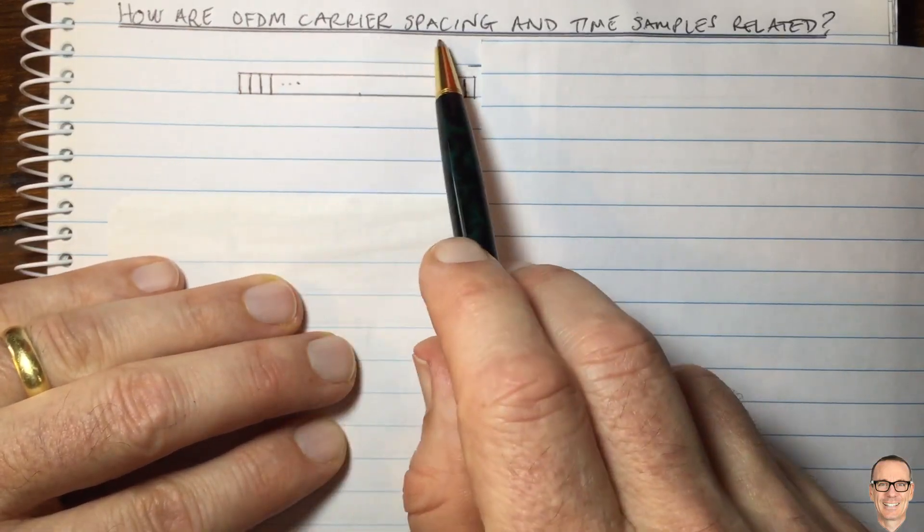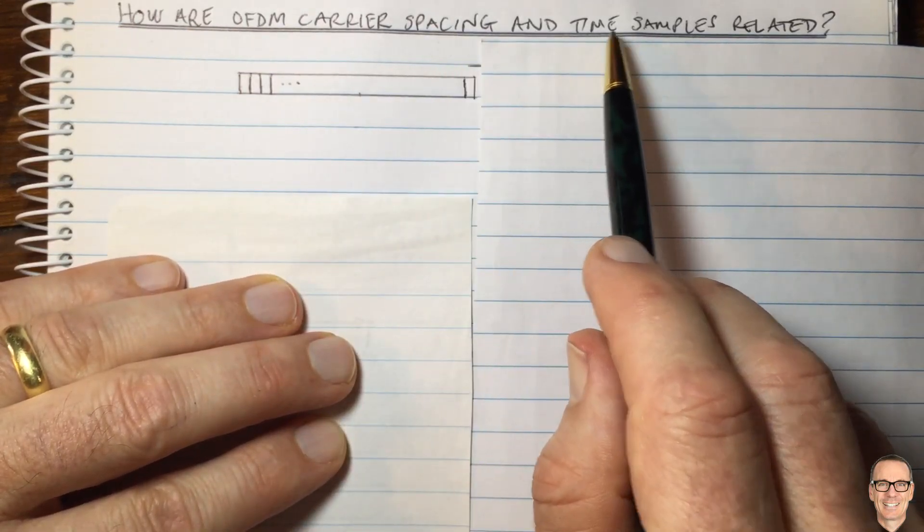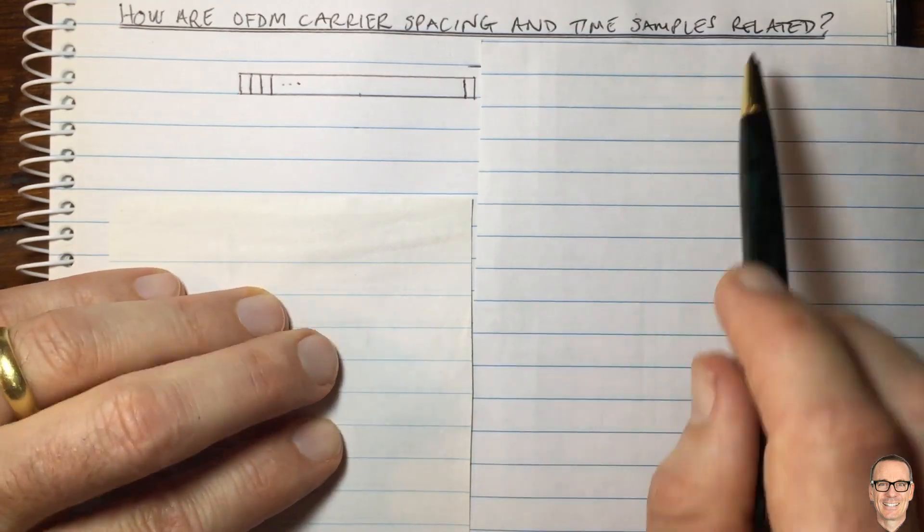How are OFDM carrier spacing and the time samples of the transmitted signal related?